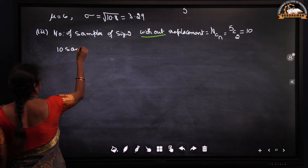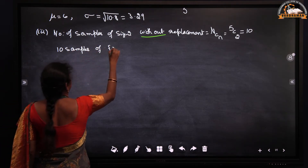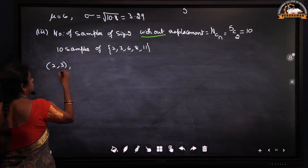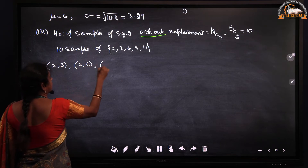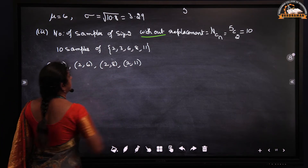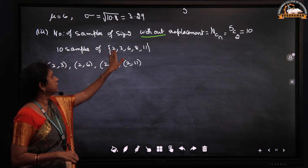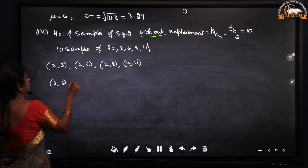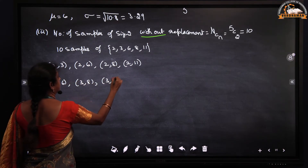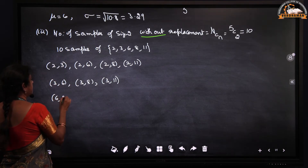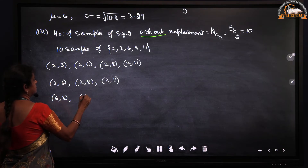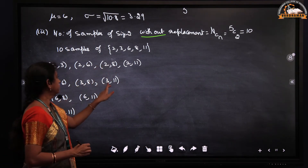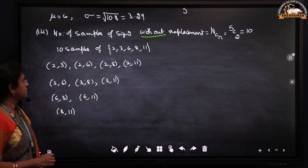The 10 samples drawn from {2, 3, 6, 8, 11} without replacement are: (2,3), (2,6), (2,8), (2,11), then (3,6), (3,8), (3,11) — we do not consider (3,2) since (2,3) is already listed, and repetitions like (3,3) are excluded. Continuing: (6,8), (6,11), and (8,11), giving us a total of 10 samples.